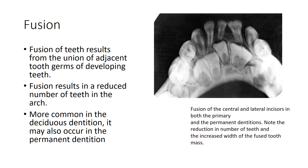Fusion of teeth results from the union of adjacent tooth germs of developing teeth. Fusion results in a reduced number of teeth in the arch and is more common in the deciduous dentition but can also be seen in permanent dentition. This is an example of fusion of central and lateral incisors in both primary and permanent dentitions. It is important to note the reduced number of teeth and the increased width of the fused tooth mass.